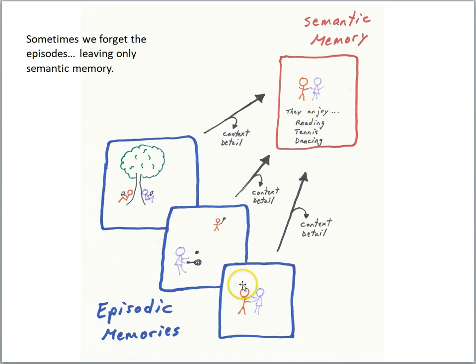In other words, the episodes are providing the contents that are going to be stored in semantic memory, but we might forget the details and the circumstances of the learning. So we'll know things about this couple, but we can't retrieve vivid, detailed memories.